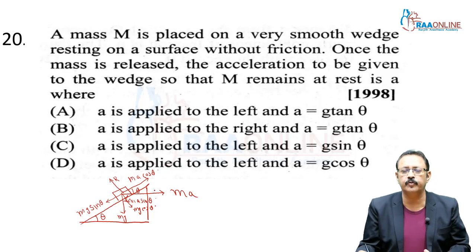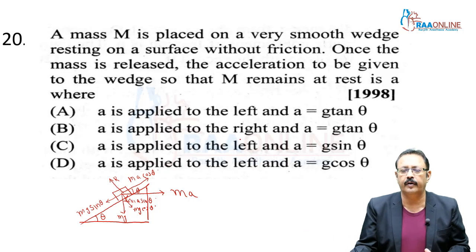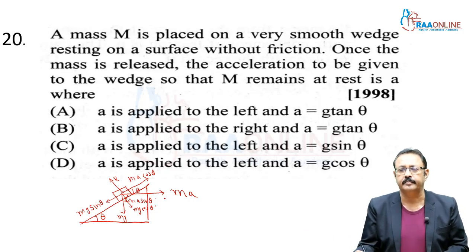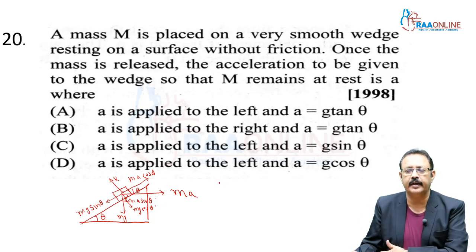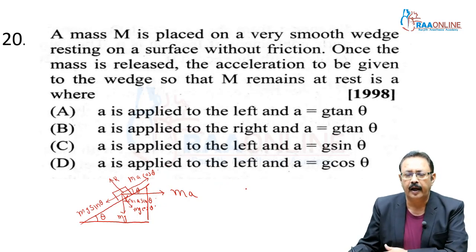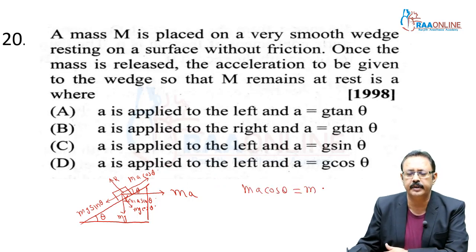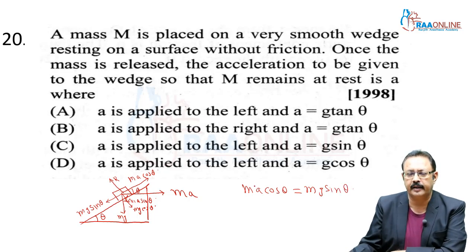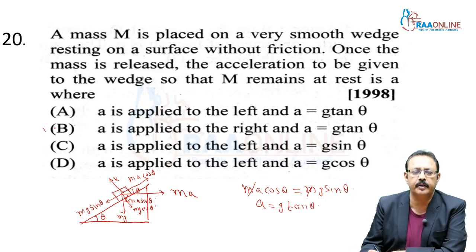For balance: MA cosθ = mg sinθ. Cancel m. So A = g sinθ/cosθ = g tanθ. We are going with option B (g tanθ).